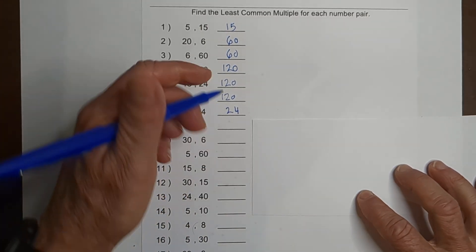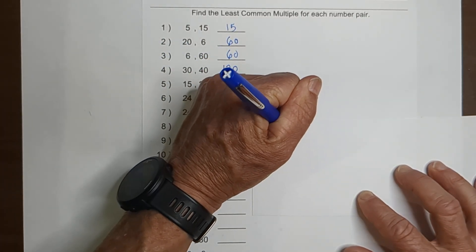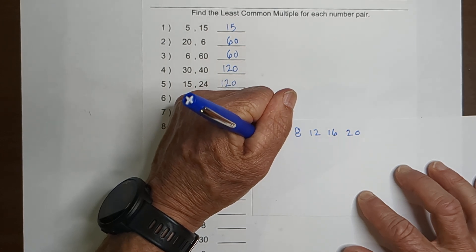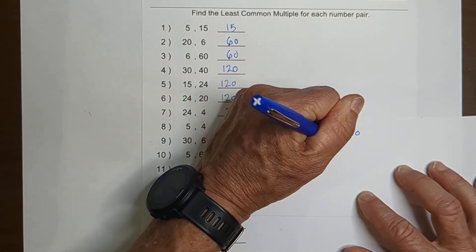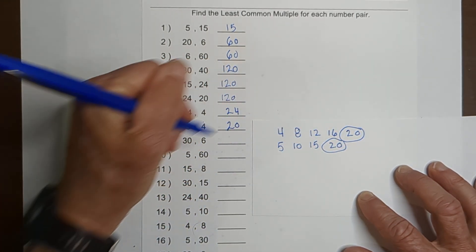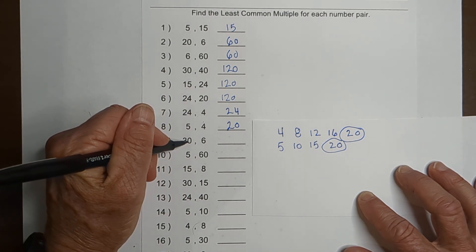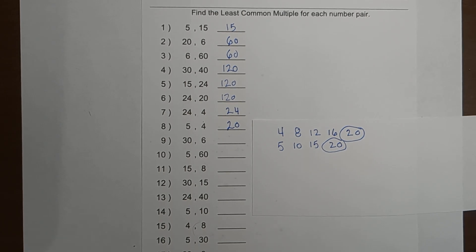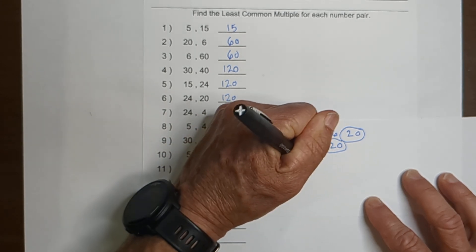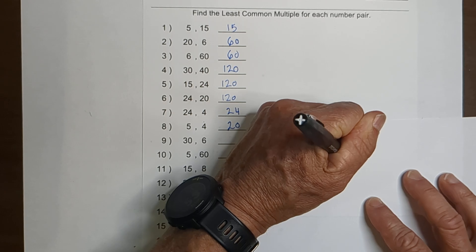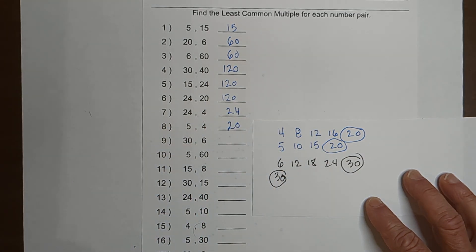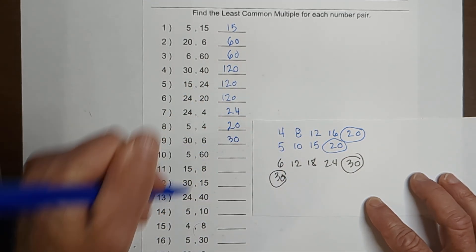We have 5 and 4. Let's start with 4: 4, 8, 12, 16, 20. And then 5: 5, 10, 15, 20. There it is — common factor. So the LCM is 20. Now let's go with 30 and 6. I'm going to start with the smaller number again. We have 6, 12, 18, 24, 30. And with 30, I can see we have a common factor. So the LCM is 30.